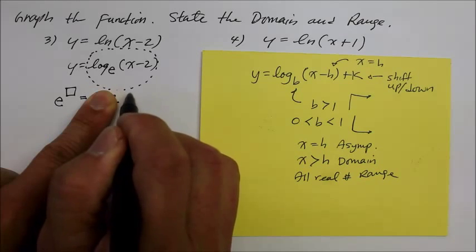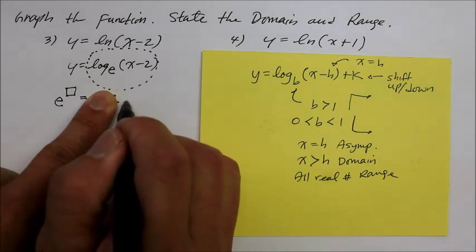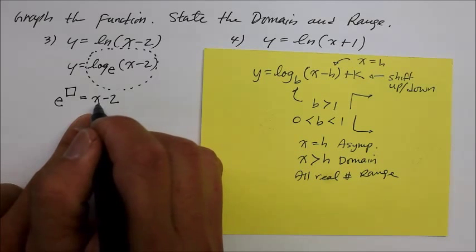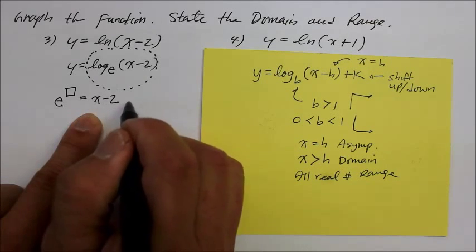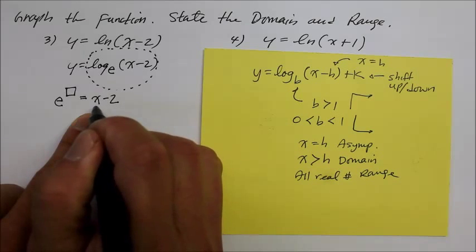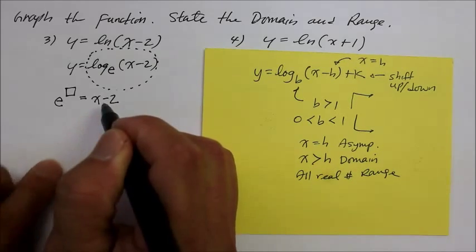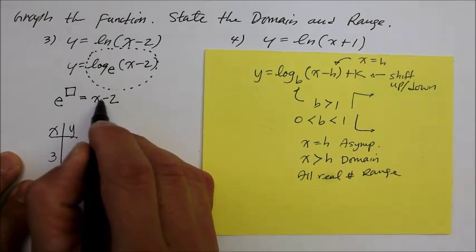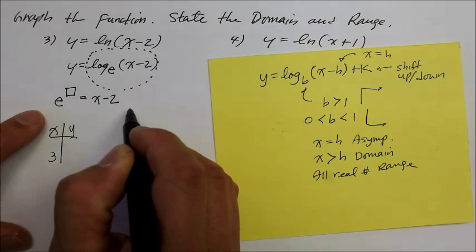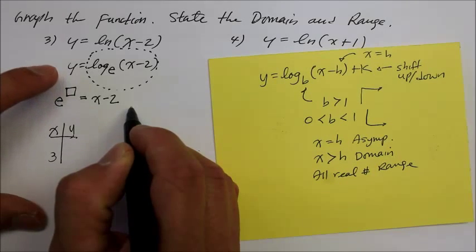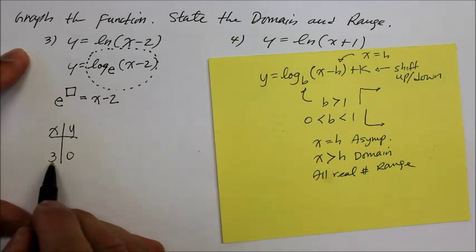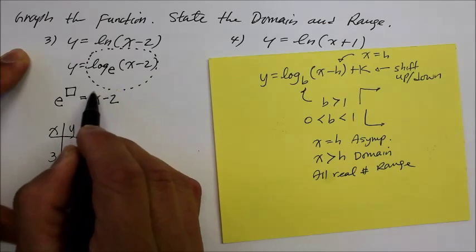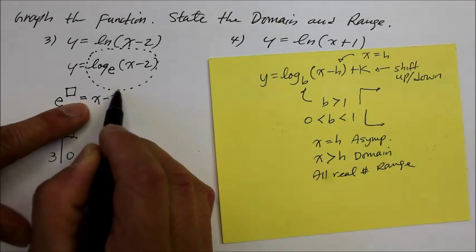Well, I would choose a 1. Remember, any number raised to a 0 is a 1, isn't it? But since we have x minus 2, what should the x be so that the number minus 2 is the 1 I want? Well, you would have to choose x to be 3. Because if you chose x to be 3, 3 minus 2 is 1, and e to what power is 1? 0. That's how you choose the input. This whole thing I want it to be 1, but for that to happen I would have to make x into a 3.